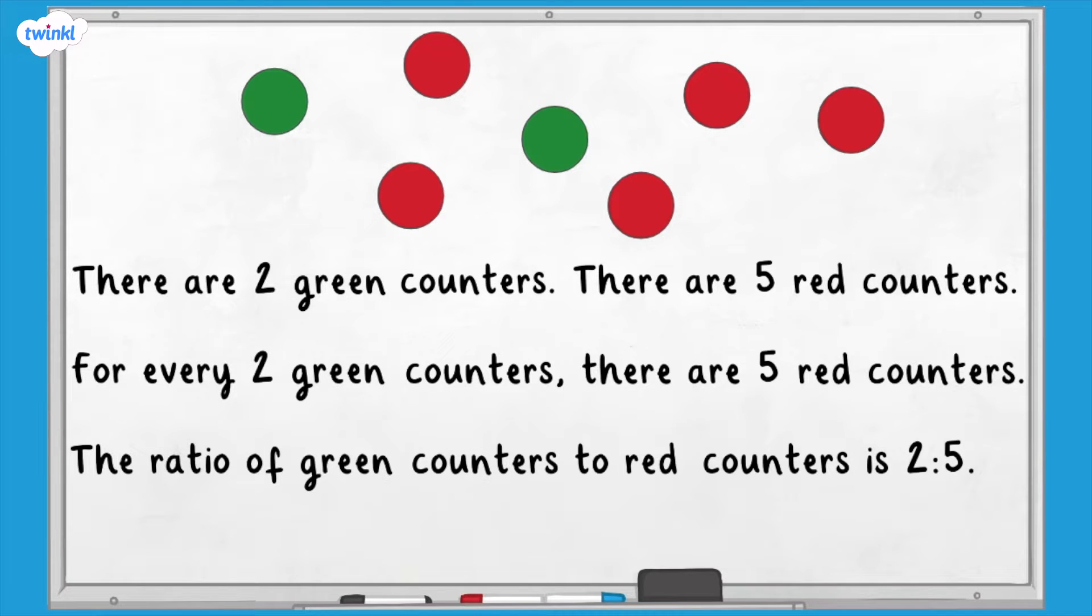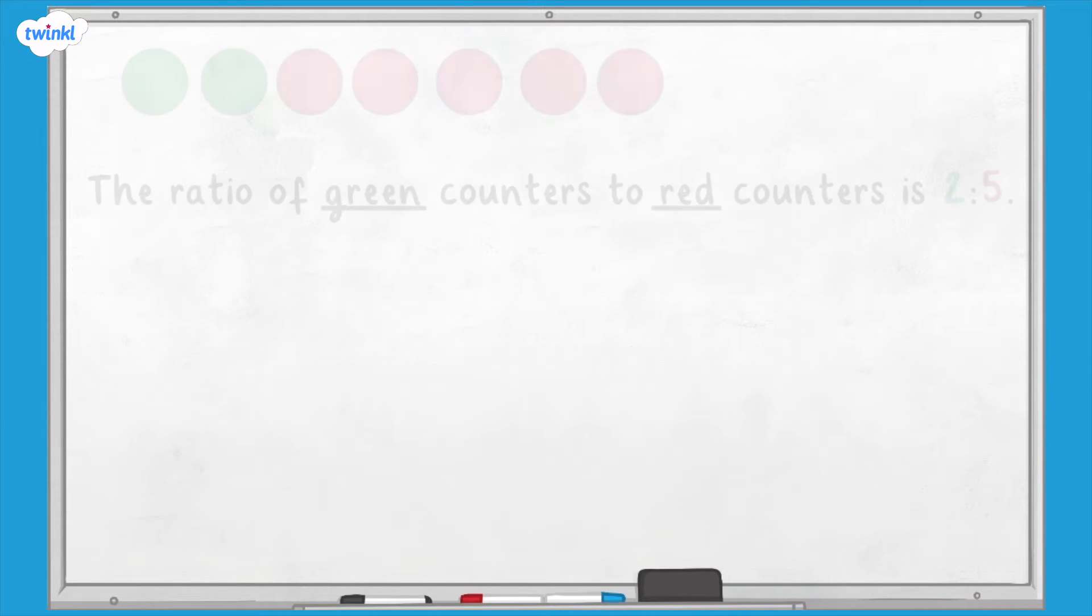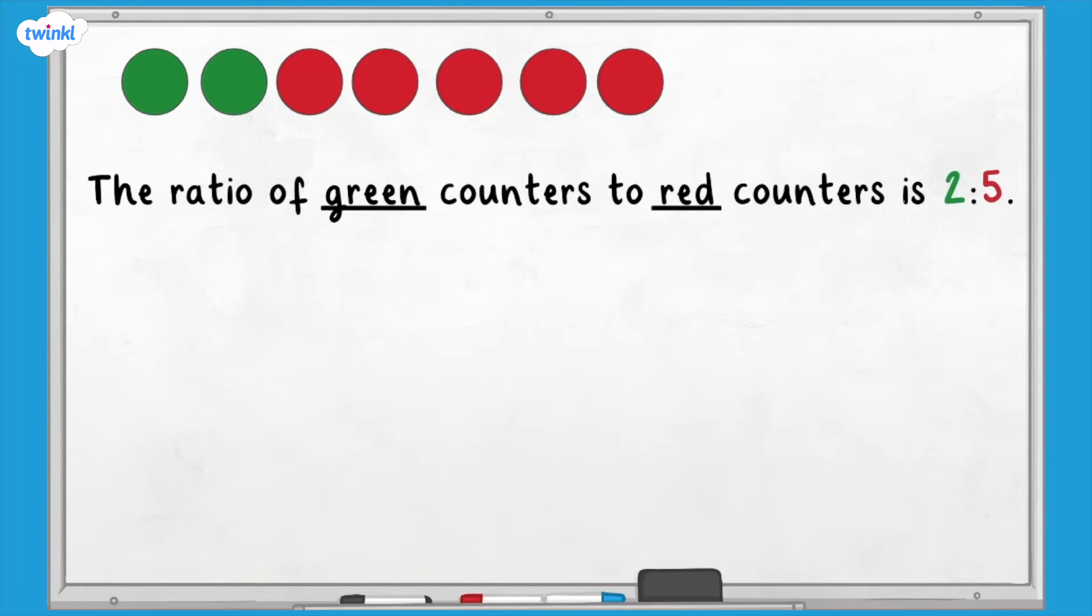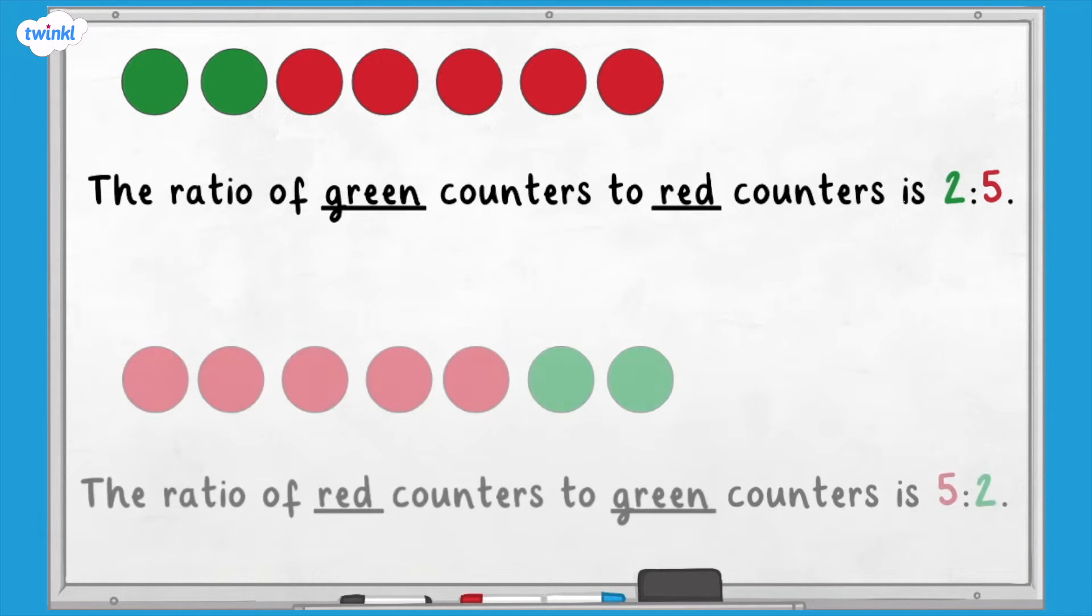When we use the ratio symbol, it's important to get the numbers the correct way round. The ratio of green counters to red counters is two to five. The number of green counters comes first, then red. The ratio of red counters to green counters would be five to two. The number of red counters first, then green.